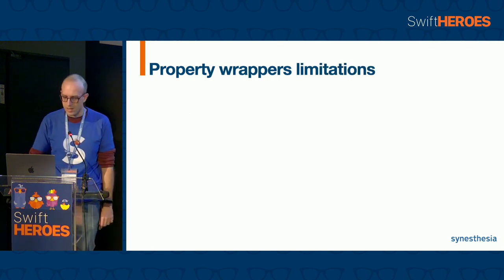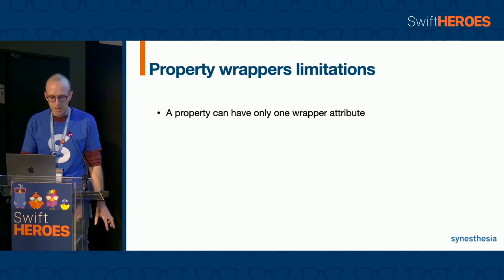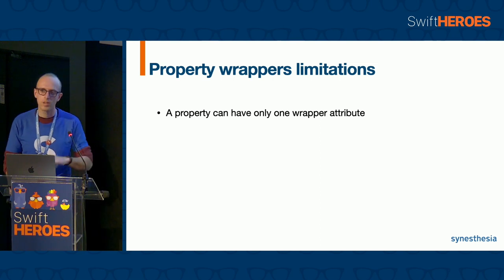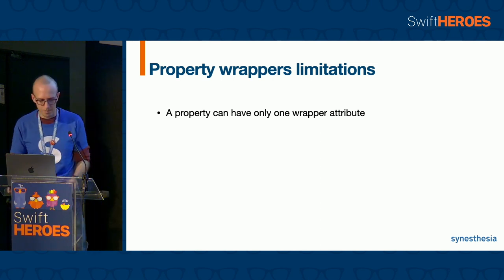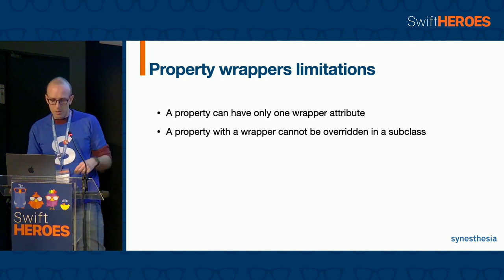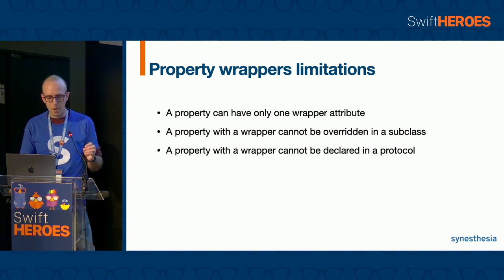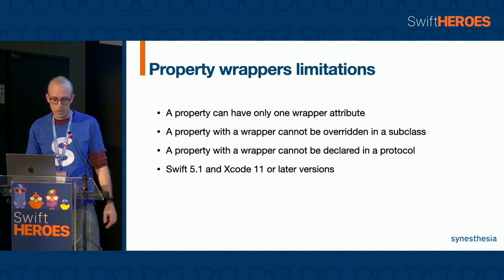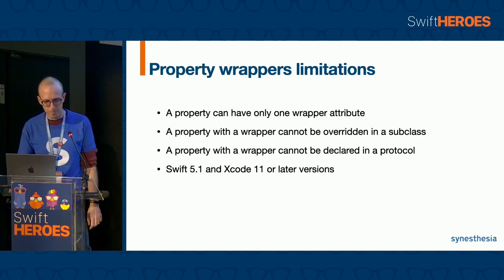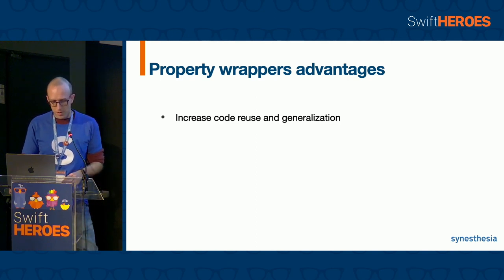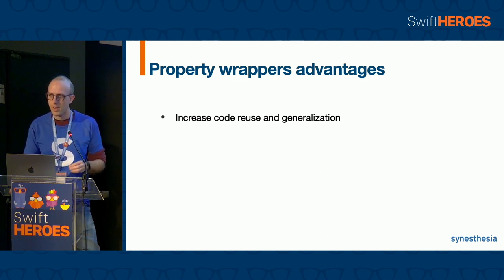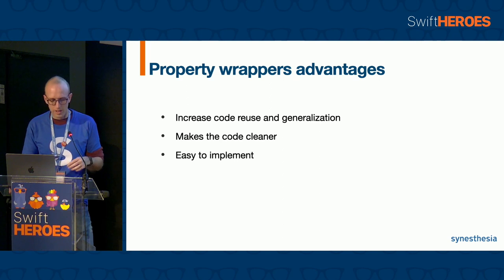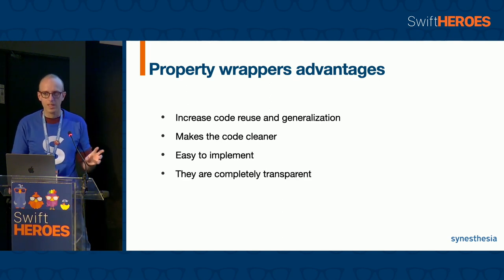But a property wrapper has also some limitations: a property can have only one wrapper attribute, so we cannot add two or three attributes to a property. A property with a wrapper cannot be overridden in a subclass. A property with a wrapper cannot be declared in a protocol. And you have to use Swift 5.1 and Xcode 11 or later versions. The advantages of a property wrapper are that they increase code reuse and generalization, they are a great way to remove boilerplate in your code, they make the code cleaner, are easy to implement, and are completely transparent.